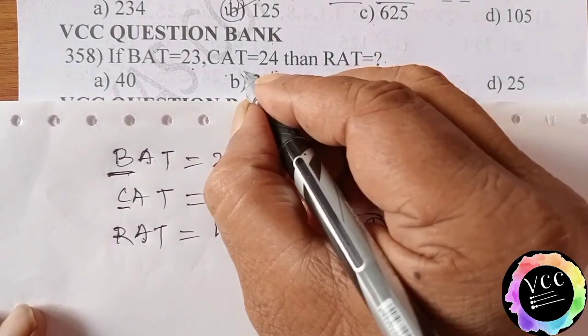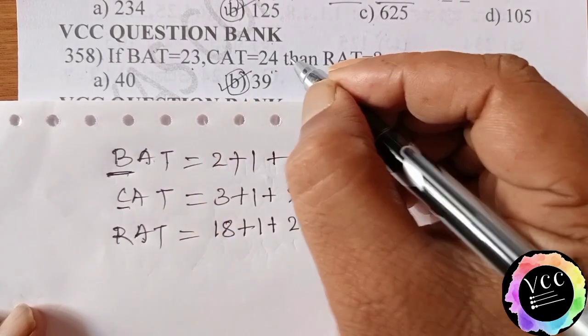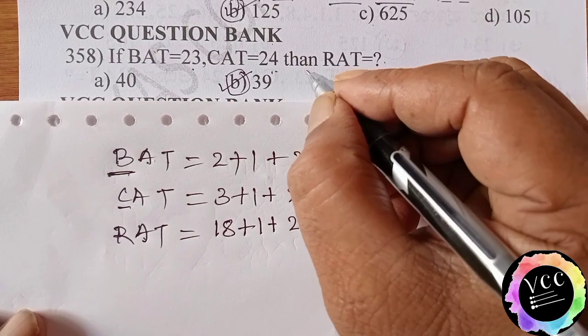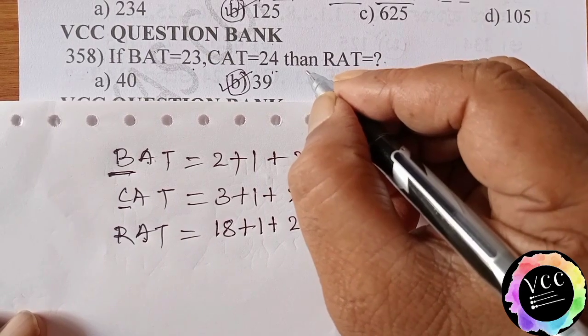39 means, dear students, B option is the correct answer. This type of questions will come in Sainik School and other quantitative exams also. It is very important in the examination.